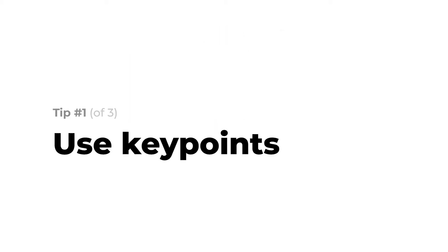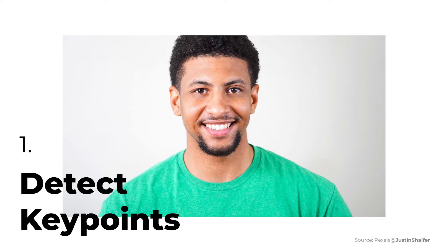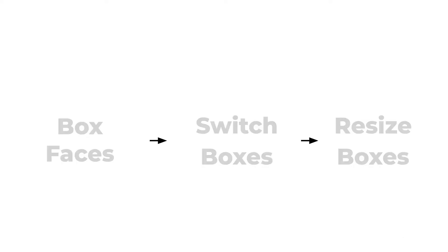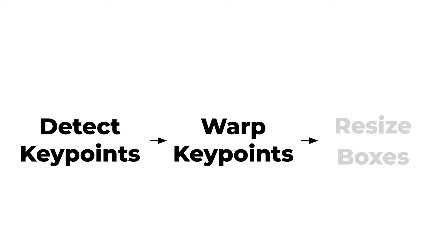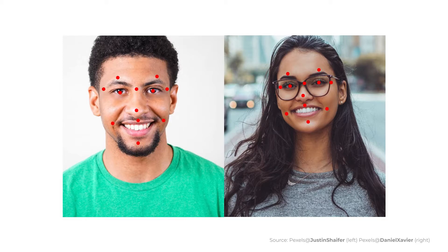The first hack is to use key points instead of boxes. Key points correspond to meaningful parts of the face, like the nose bridge, area above the eyebrow, dimples, and more. So instead of boxing faces for step one, we'll now detect key points on the face. For step two, instead of switching boxes, we'll warp the face using its key points. To visualize a warp, take the key points from before, and for a second face, we'll also extract key points.